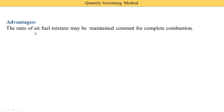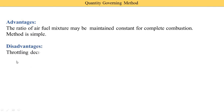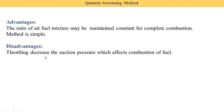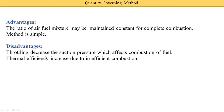The advantages of quantity governing: the air-fuel ratio may be maintained constant for complete combustion, so complete combustion takes place. The matter is simple. The disadvantage: throttling increases the suction pressure, so every time we do throttling the suction pressure also changes. This throttling increase in suction pressure affects the combustion of fuel. Thermal efficiency increases due to efficient combustion.